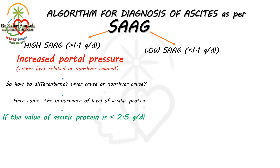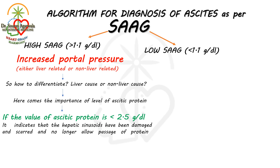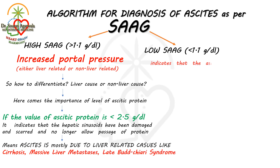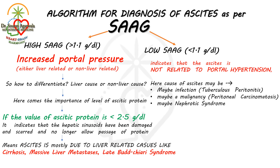If the value of ascites protein is less than 2.5 gram per deciliter, it indicates that the hepatic sinusoids have been damaged and scarred and can no longer allow passage of protein. This means ascites is mostly due to liver-related causes like cirrhosis, massive liver metastasis, or late Budd-Chiari syndrome. In the case of low SAAG, the ascites is not related to portal hypertension; causes may include infection like tuberculosis peritonitis, malignancy like peritoneal carcinomatosis, nephrotic syndrome, or pancreatitis.